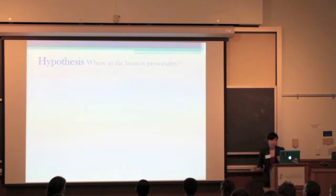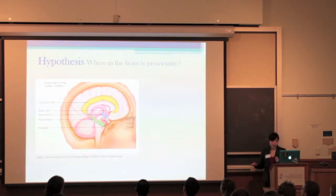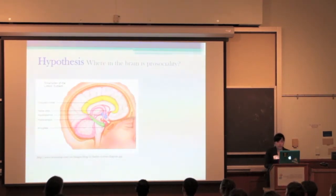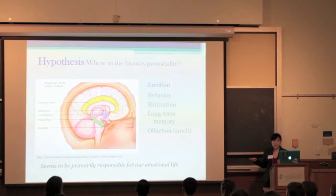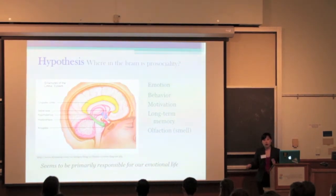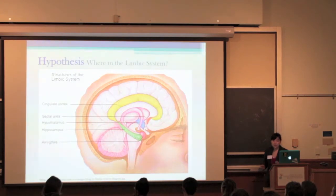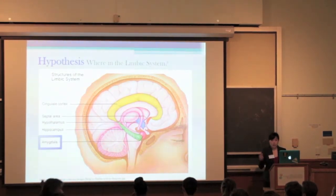So, what is our hypothesis? Our hypothesis is that these kinds of behaviors can be found in the limbic system, which has been shown to be involved in emotion, behavior, motivation, long-term memory, olfaction, which is smell, and it seems to be primarily responsible for our emotional life.